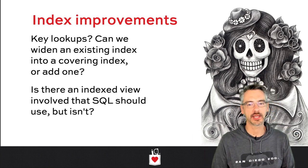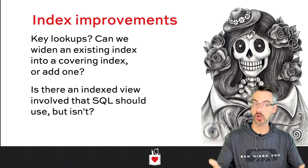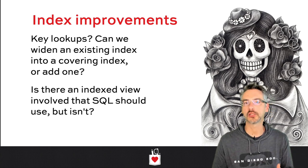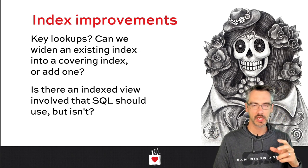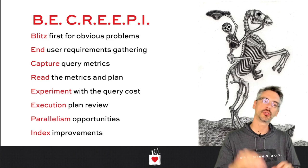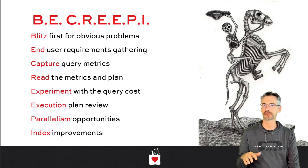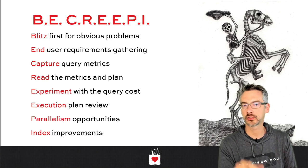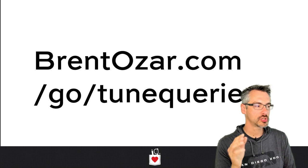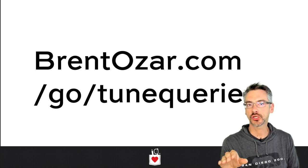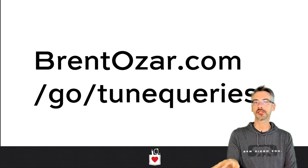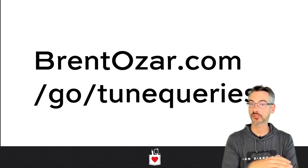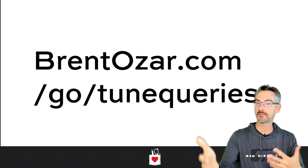I can't build covering indexes for every single query, although when I first get started with a database that's never had a DBA's care, there's often a lot of low-hanging fruit. This is the Be Creepy process — you don't always work through all these steps in exactly the same order. Everything you'll see me do, including this process, is downloadable from brentozar.com/go/tune-queries. It's all totally free and open source.